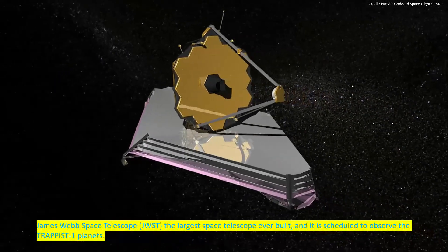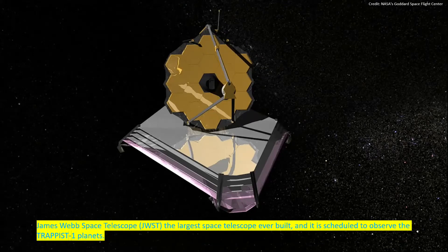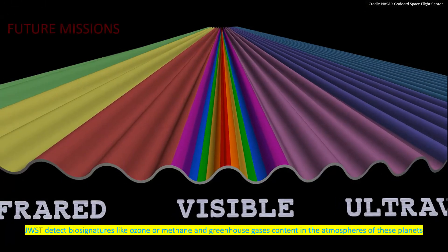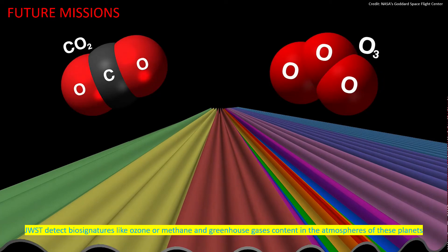James Webb Space Telescope, the largest space telescope ever built, is scheduled to observe the TRAPPIST planets. James Webb Space Telescope can detect biosignatures like ozone or methane and greenhouse gases contained in the atmospheres of these planets.